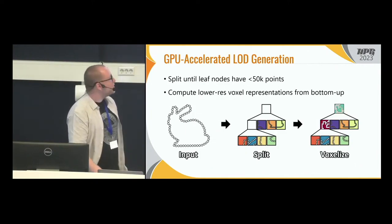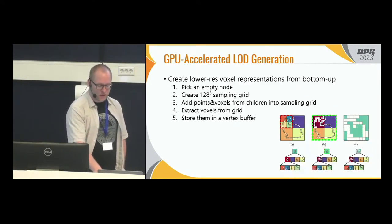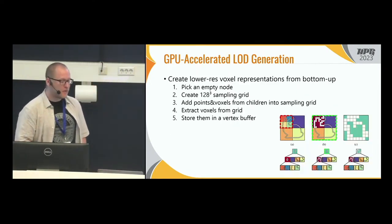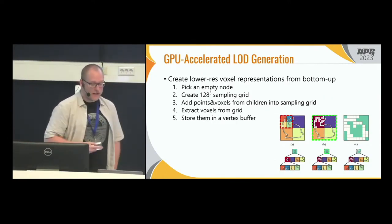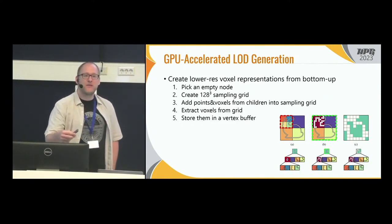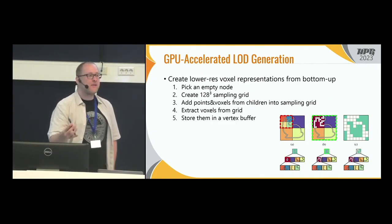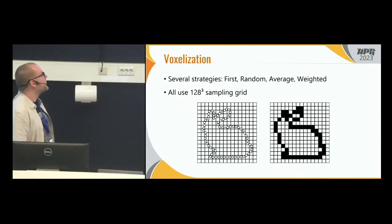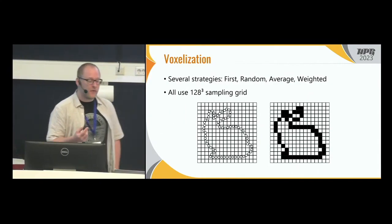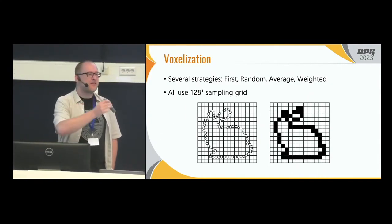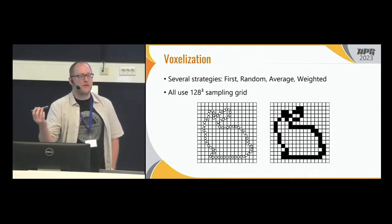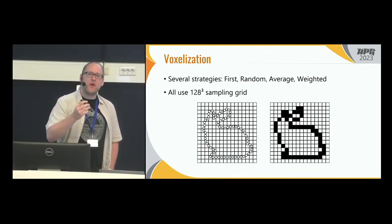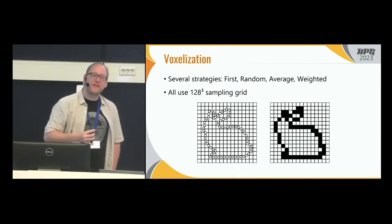Now we have points in the leaf nodes and must populate the empty inner nodes with voxelized representations. We do that by picking an empty node, creating a sampling grid of size 128, and adding all the points and voxels from the child nodes into the sampling grid. Then we extract the voxels and store them into a vertex buffer. For computing color, the simplest is the first-come strategy: the first point that hits a voxel cell generates the voxel and its color is used as the voxel color.